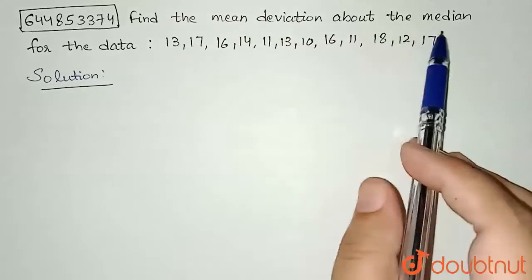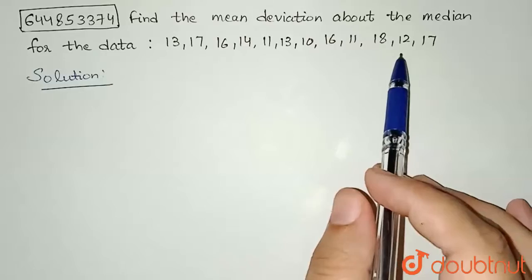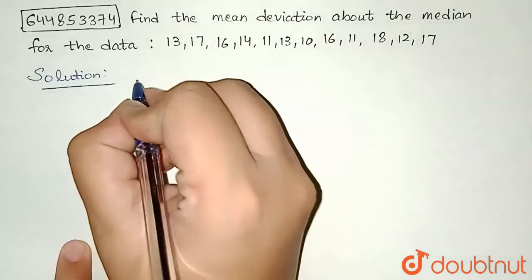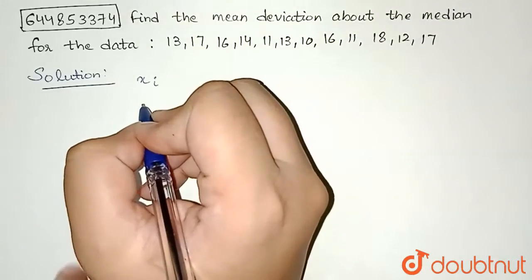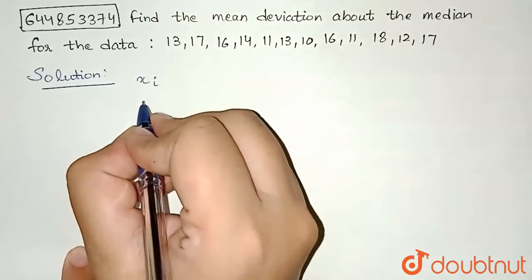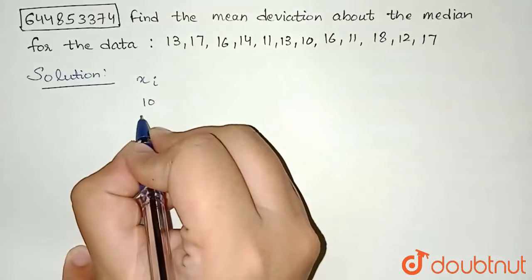First of all, let's see what will be the median for the given data. I am writing all my observations in increasing order. So I can see the smallest one as 10.